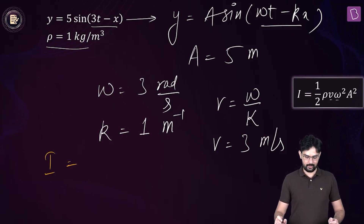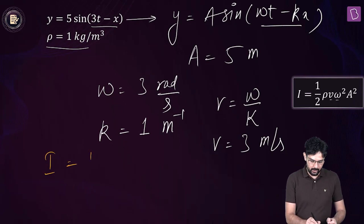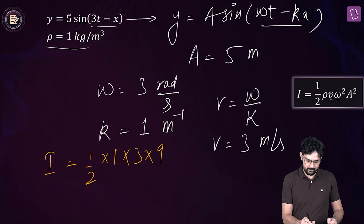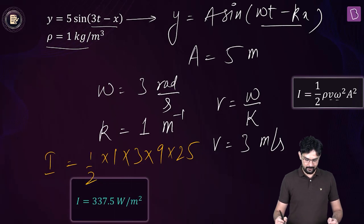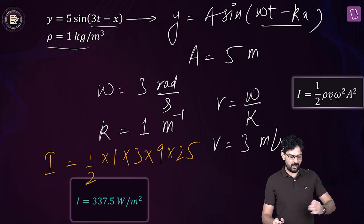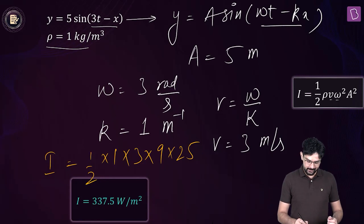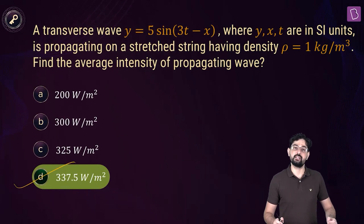The average intensity equals half into rho (which is 1), into v (which is 3), into omega squared (which is 9), into A squared (which is 25). This gives 337.5 watt per meter squared. So the average intensity of this transverse wave is 337.5 W/m².